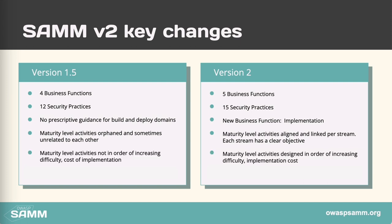One thing we noticed around SAM 1.5 is that there was not an intentional progression in the activities. It was possible to orphan an activity and never do it while still completing the higher activities. In version 2.5 we went deliberate about this to make sure — with a couple of exceptions — that it is nearly impossible to get full marks for level 3 without doing anything at the lower levels. There are a couple of exceptions, and you will see some of them in the next chapters.